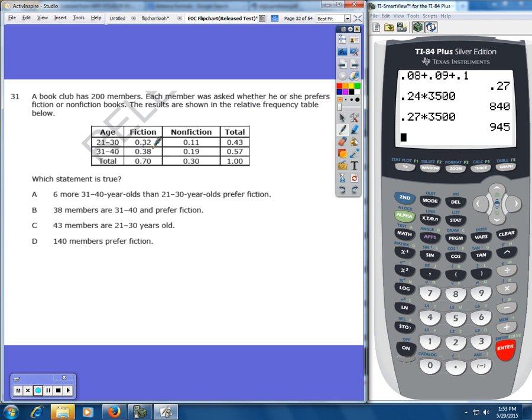The way that we do that is we take each number right here, each decimal, and we multiply it by the total. So 0.32 times 200 that would give us the number of people in this category which is 64. Then we'll do 0.38 times 200 so on and so forth. I've already gone ahead and done that to save time so I'm just going to write down the numbers in each of these categories.